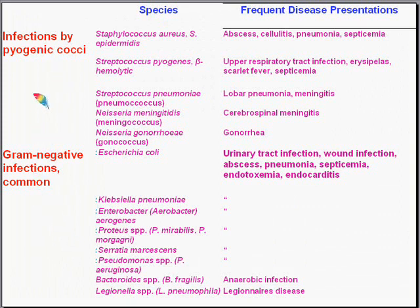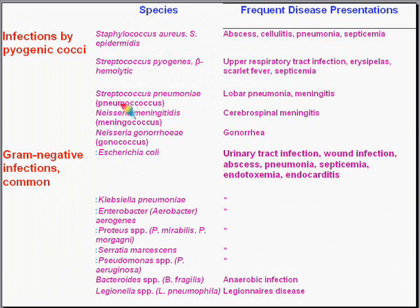By far the single most common category are the so-called pyogenic cocci. Even gram-negative bacteria can evoke a purulent reaction, but the cocci, whether gram-positive or gram-negative, almost always cause a significant amount of pus as an immune response. The gram-positive cocci are generally staph and strep, while gram-negative cocci include Neisseria meningitidis causing cerebrospinal meningitis, and Neisseria gonorrhoeae causing gonorrhea.